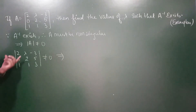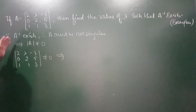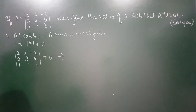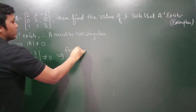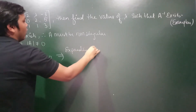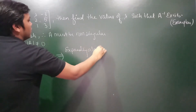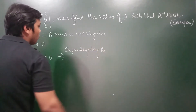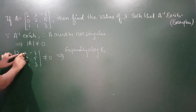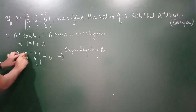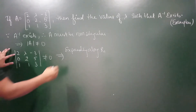अब यह हमारे उपर है कि हम इसको किस row से या फिर किस column से expand करते हैं. हम इसको row 1 से expand कर लेते हैं. Expanding along row 1 — अगर हमने इसको row 1 से किया तो हमें पता है यहाँ होता है plus, यहाँ होता है minus, यहाँ होता है plus.